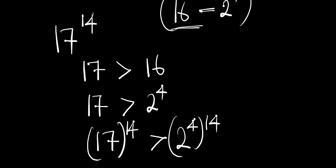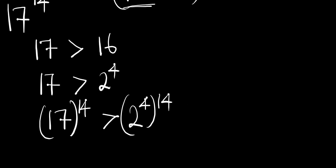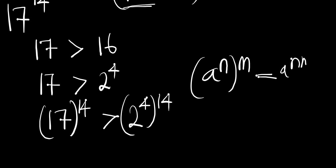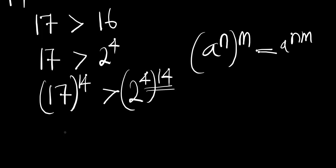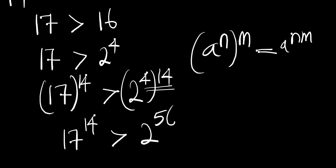Now we are also going to make use of this identity: if you have a to the power of n, all to the power of m, it equals a to the power of n times m. So let's multiply 4 times 14, we are going to have 56. Meaning that 17 to the power of 14 is greater than 2 to the power of 56.